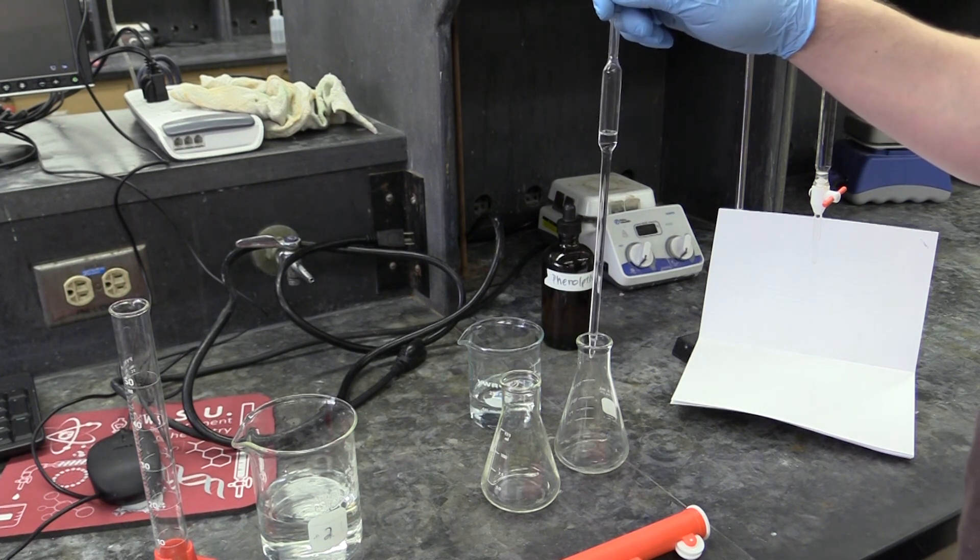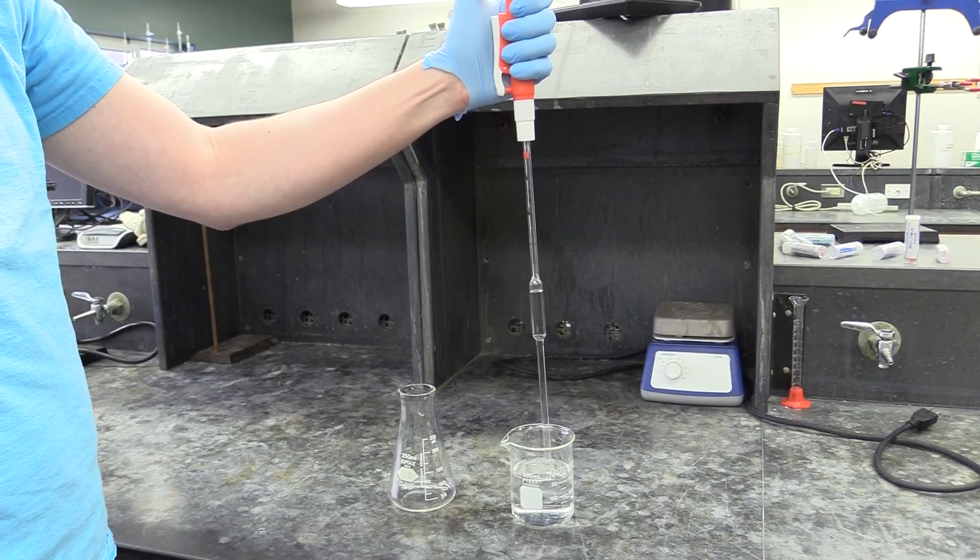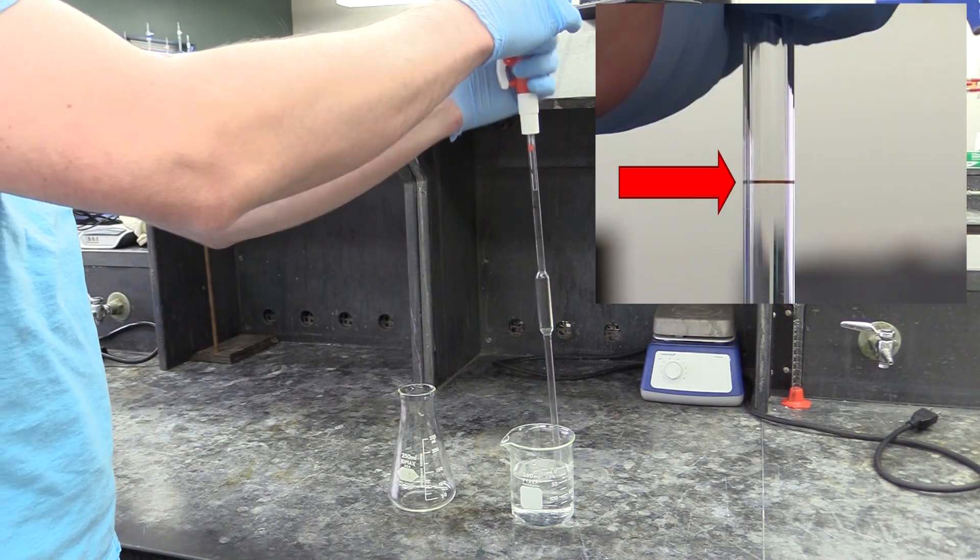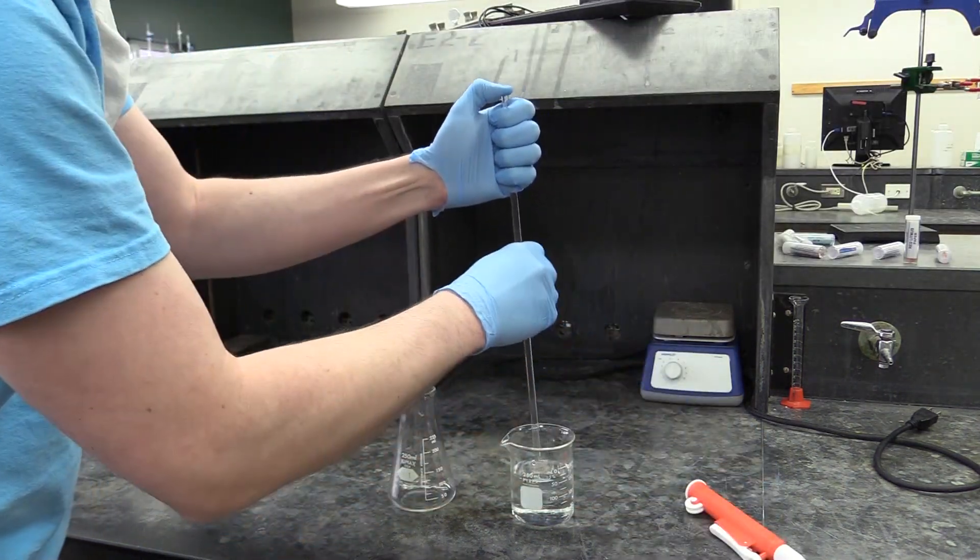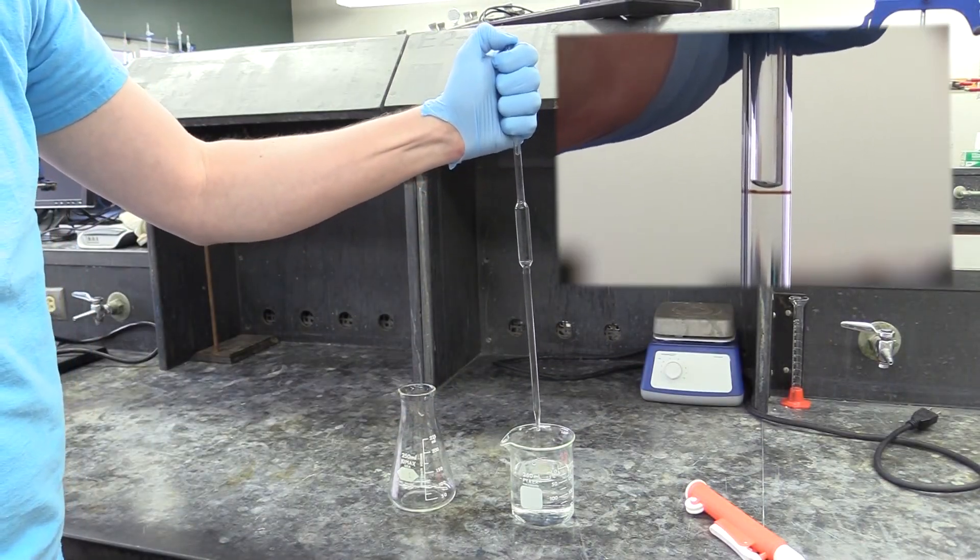In case you're unfamiliar with the volumetric pipette, here's a couple of tips for using one. To fill it, use your pump to slowly draw the liquid up to a point just past the index mark on the pipette. Then remove the pump and cover the top with your thumb or finger. Finish filling it by letting the liquid level drain until the meniscus is aligned with the pipette's index mark.